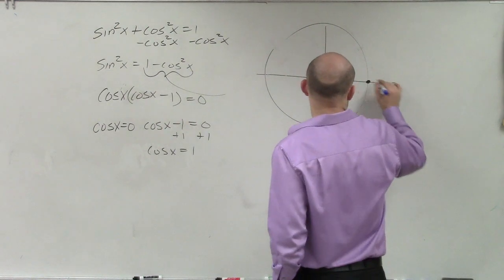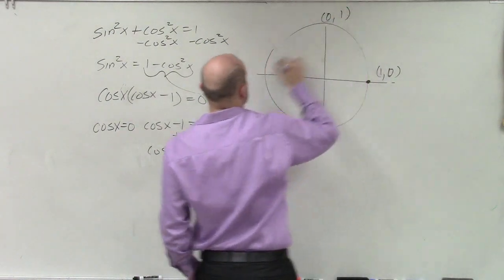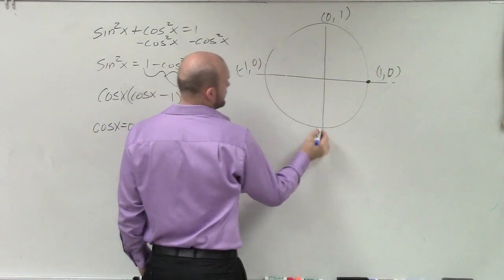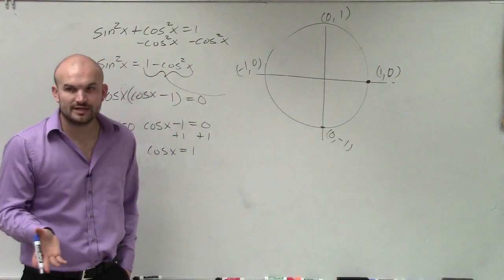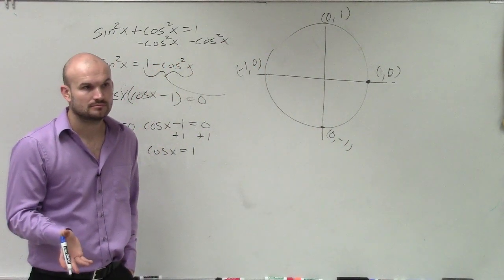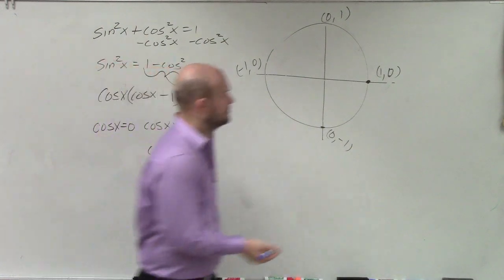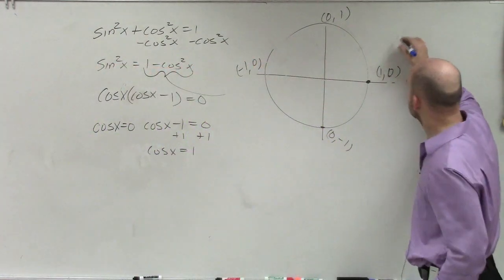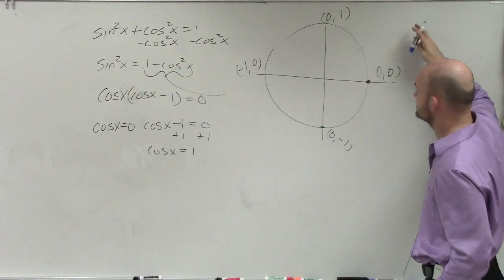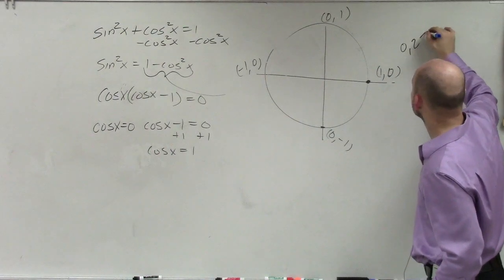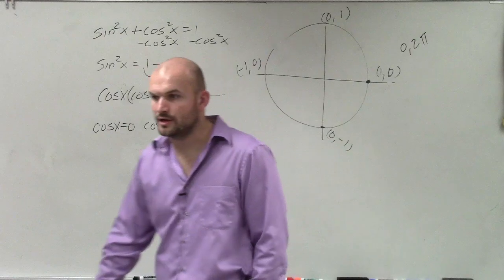Well, obviously, the first couple points that we learned was one comma zero, zero comma one, negative one comma zero, and zero comma negative one, right? So when does my x coordinate equal one? X coordinate equals one at cosine of x equals one at zero, or at two pi. Or the angle is two pi, all right?